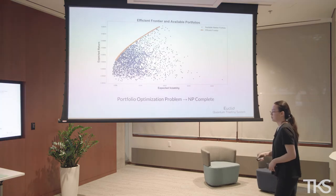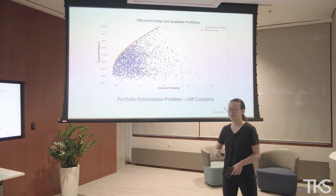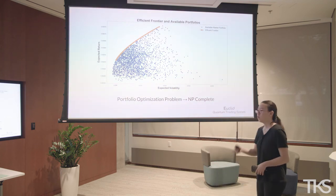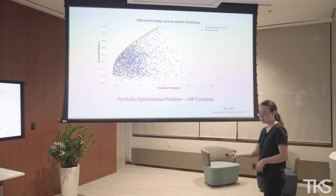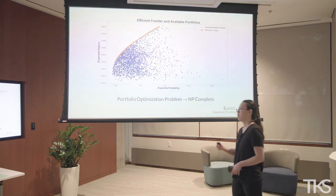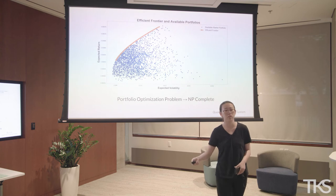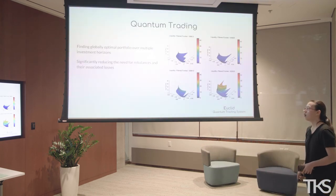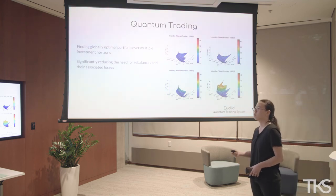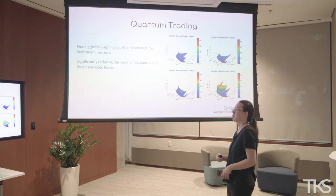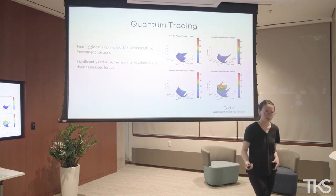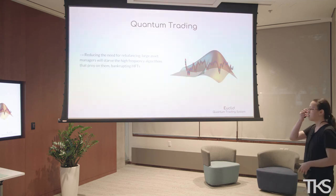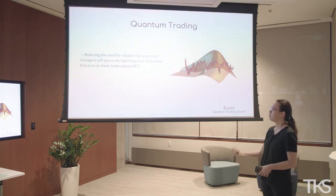How this works is that the underlying problem behind rebalancing a portfolio is the portfolio not being optimal. But with our classical computers, they are not able to solve the portfolio optimization problem, as it has been proven to be NP-complete. The current method is to use approximations. But with quantum computers, we are able to find a globally optimal portfolio over multiple investment horizons, which significantly reduces the rebalancing activities and the fees associated with that.